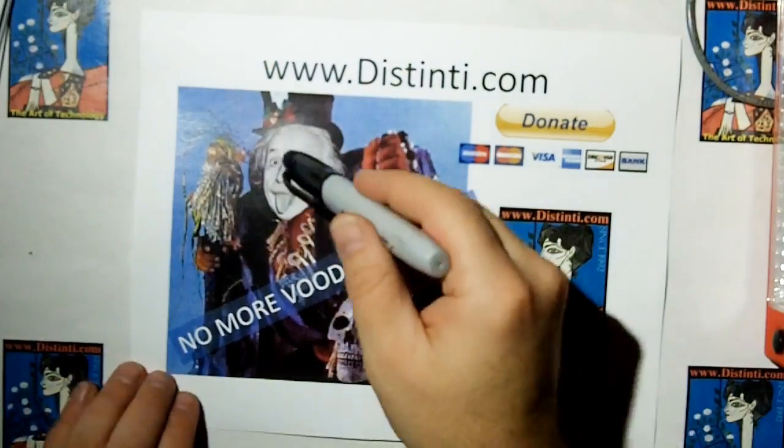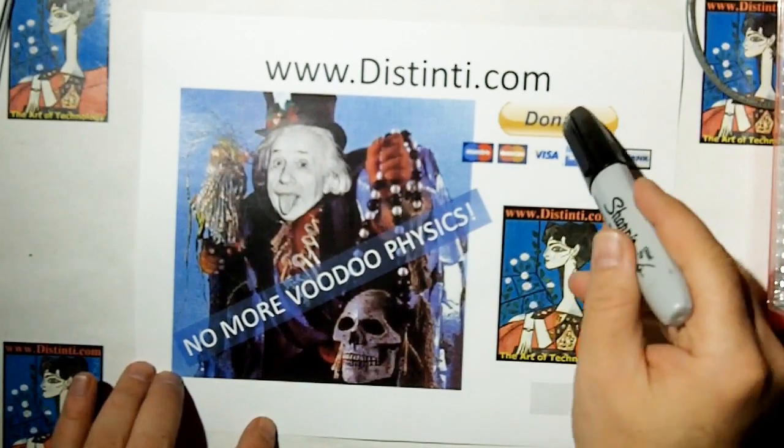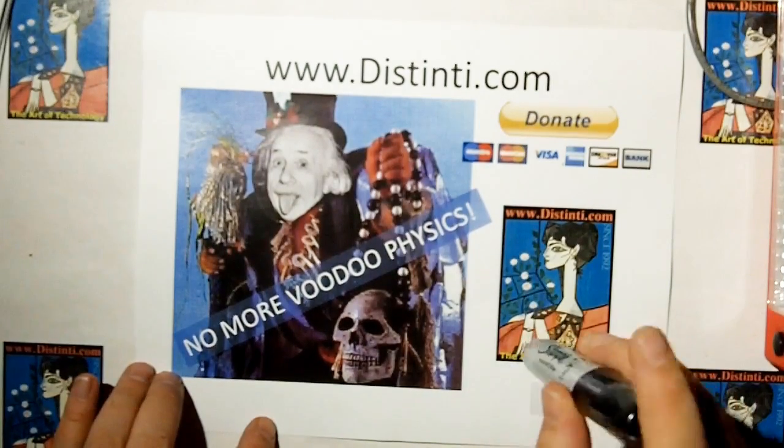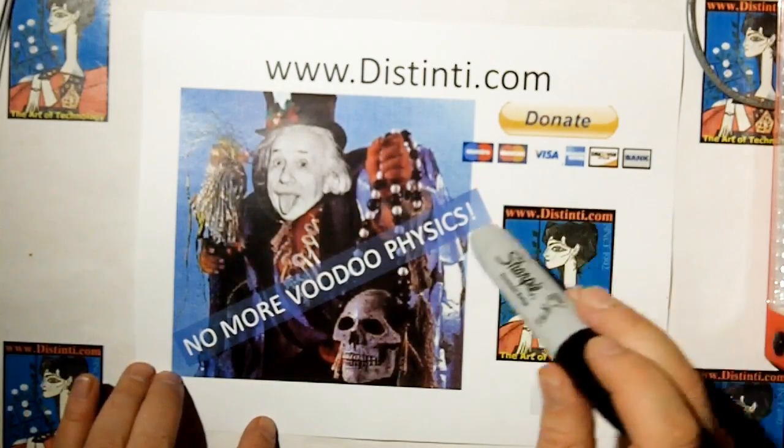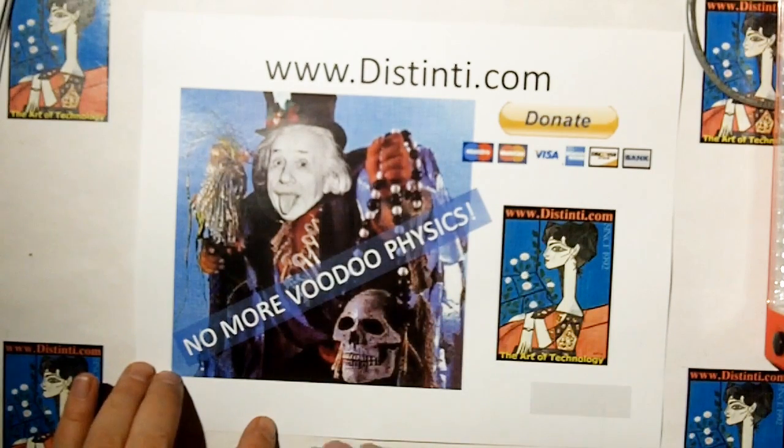Thank you. This is Einstein with his voodoo. If you can donate, I'd appreciate it. If you can donate, go to my website. There's a donate button. Sorry, my website's out of date. My name's Robert Sinti. I'm an electrical engineer with over 30 years experience. If you do subscribe, you will get the videos when they come out. Thank you.